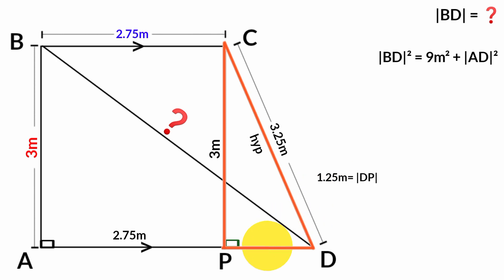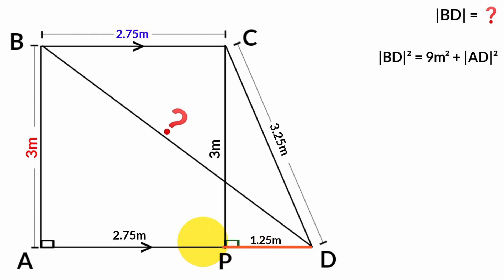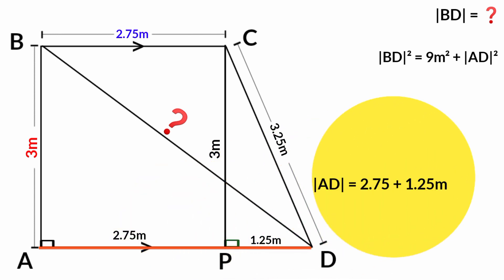Since line DP is 1.25 meters and side AP is 2.75 meters, the total length of line AD is 2.75 meters plus 1.25 meters, which equals 4 meters.